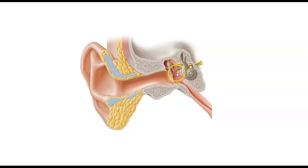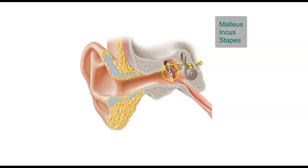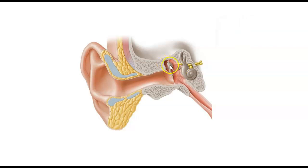The auditory ossicles are important for transmitting sounds to the inner ear. These are called the malleus, incus, and stapes. The malleus bone is attached to the tympanic membrane. The foot plate of the stapes inserts into the oval window of the inner ear. The incus is the bone connecting the malleus and stapes.